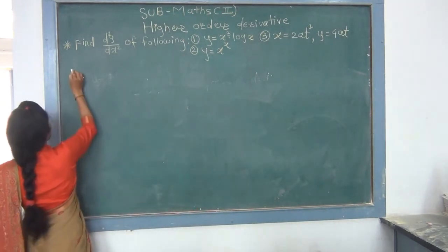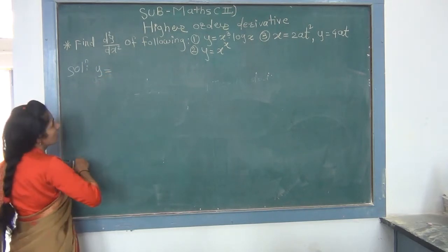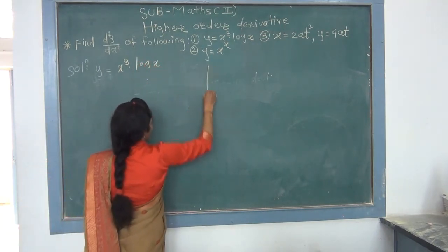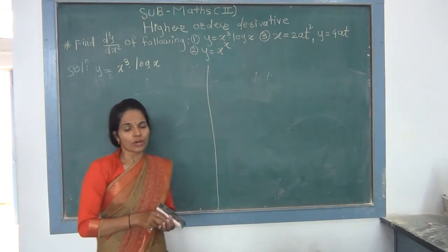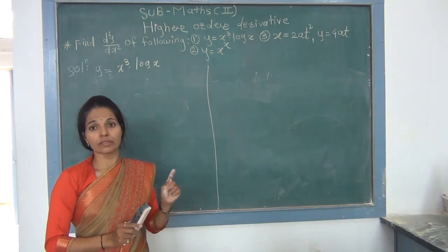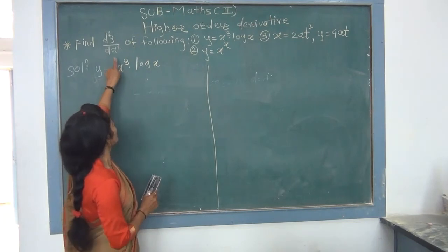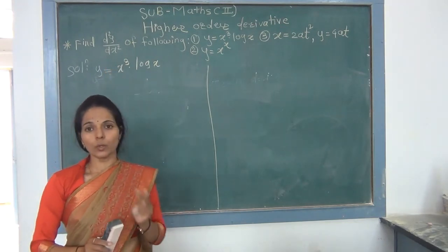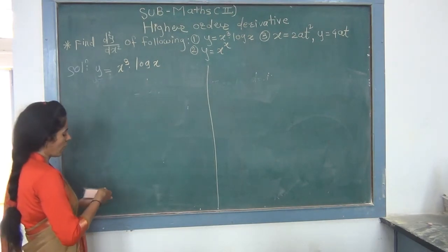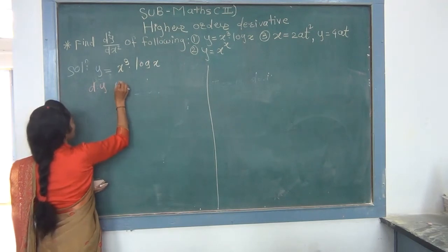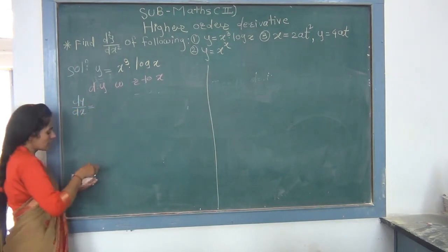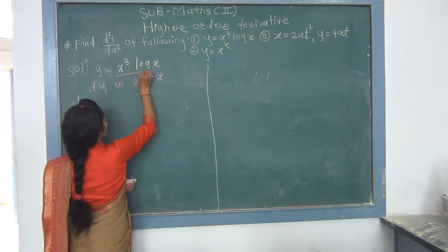We begin by differentiating y = x³·log(x) with respect to x to get the first order derivative. On the right-hand side we have a product of two functions: x³ (a polynomial, standard function) and log(x) (a logarithmic, standard function). Since there is a multiplication sign between them, we apply the product (multiplication) rule.